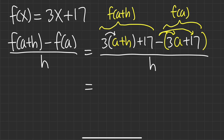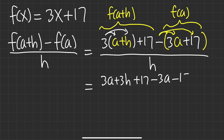Because later on we will have to distribute the negative, so all that over h. Then continue: distribute the 3, so 3a plus 3h plus 17, and then distribute the negative so negative 3a minus 17, all over h. Now you can see that 3a and minus 3a cancel, and 17 minus 17 also cancel, so we just have 3h over h.